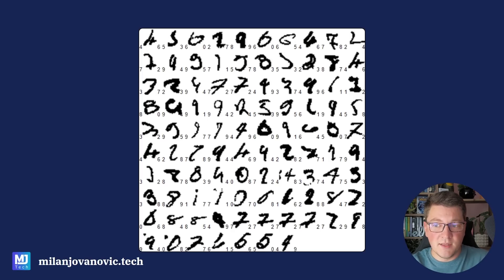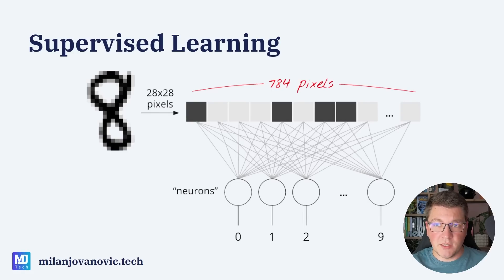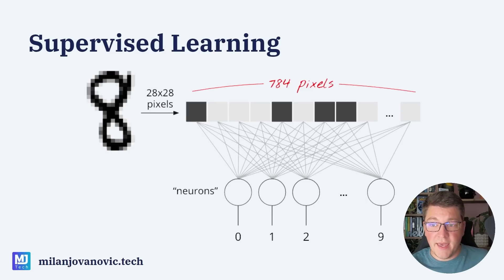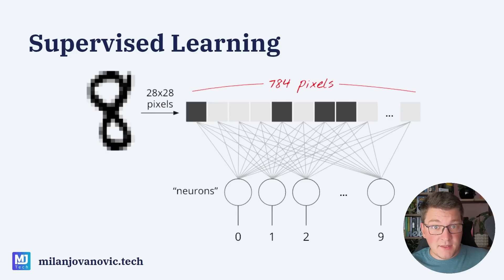Now let's go back to our digit recognition example. For each image in our data set we also have information about what is the correct number represented in that image. We can use this to determine if the output of our neural network is correct. This type of machine learning is called supervised learning because we have all of the available information. We take an input — a 28 by 28 pixel image — feed it into the neural network, observe the output, and since we know the correct output, we can compare them, calculate how far off we are, and use that to determine which direction to move the parameters inside our neural network.